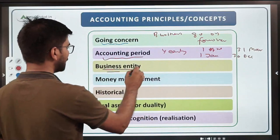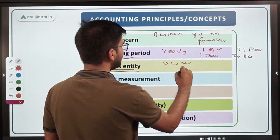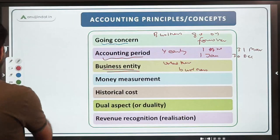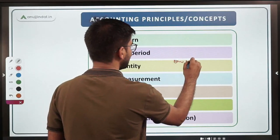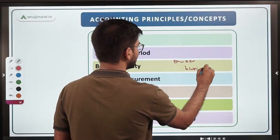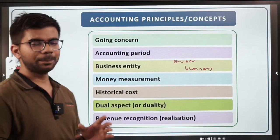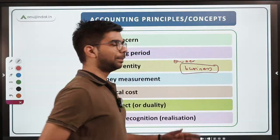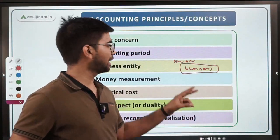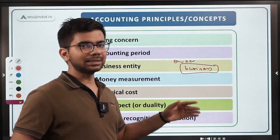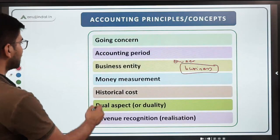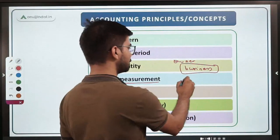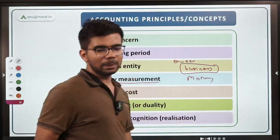The business entity concept means the owner and the business are two separate entities — the owner is different from the business. The books of account are made from the point of view of the business, not the owner. The money measurement concept says that we record only those transactions which can be recorded in money terms — all transactions are recorded in monetary form.